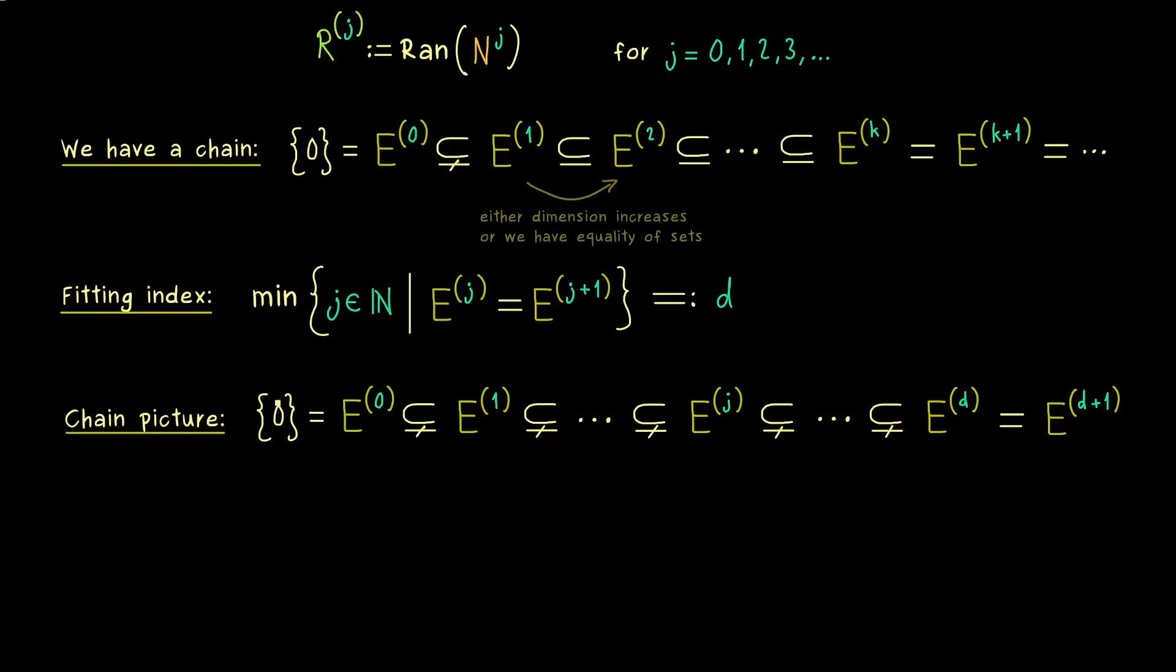And now we can make this whole chain even nicer by also putting in the ranges. In fact, it's not hard at all to show that the ranges are also nested just the other way around. Indeed, by just using the definition of the range, we immediately get these inclusions. And moreover on the left we also know that R^(0) has to be the whole space C^n. And now the first question would be, do we also have the proper subsets and the equality here in the picture for the ranges as well?